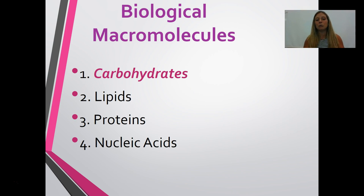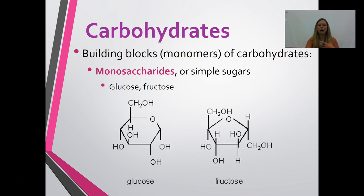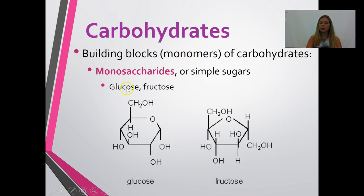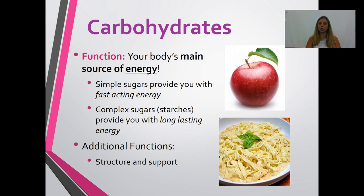The first biological macromolecule is carbohydrates. When you hear carbohydrates, think sugar. The building blocks of carbohydrates are the simplest form of sugar, called a monosaccharide — saccharide means sugar in Greek, so a monosaccharide is one sugar molecule. An example would be glucose or fructose. You put together lots of sugar molecules to make carbohydrates.